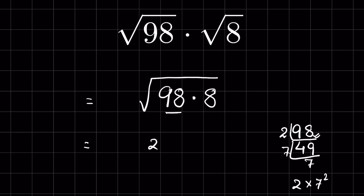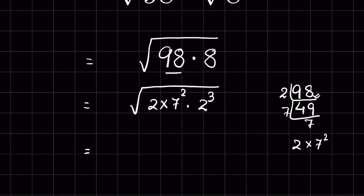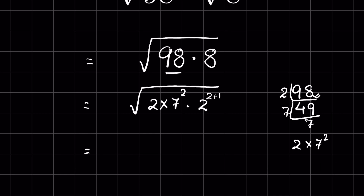So we can write 2 times 7 squared, then 8 is 2 raised to the power 3, all under square root. Now 2 raised to the power 3 can be written as 2 raised to the power 2 plus 1. Using the rule a to the power m plus n equals a to the power m times a to the power n, this becomes 2 squared times 2.